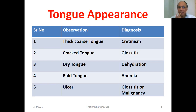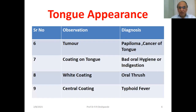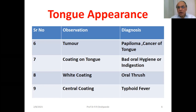Both the tongue and lips can give an idea of dehydration. A bald tongue without papillae indicates an anemic condition. Ulcers on the tongue indicate glossitis; excess ulcers may indicate malignancy. A tumor can indicate papilloma or cancer of the tongue. Coating on the tongue can indicate bad oral hygiene or indigestion; white coating indicates oral thrush.